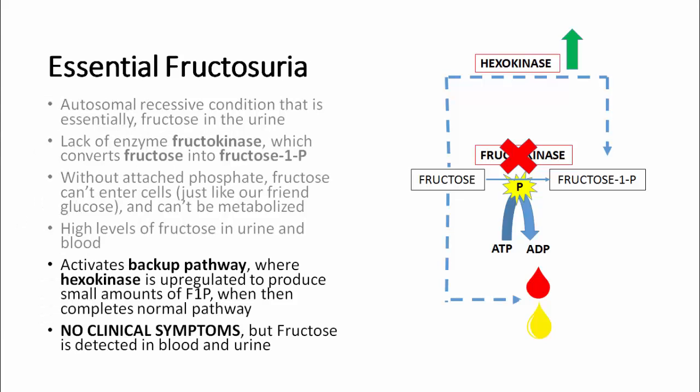It is worth noting that in patients with essential fructosuria, a backup pathway is activated in the body by which fructose is phosphorylated instead by the enzyme hexokinase, which is normally dormant in people without this disorder. Through this enzyme, patients are able to produce small amounts of fructose-1-phosphate, which then completes the normal pathway. Regardless, this disorder is typically associated with no clinical symptoms other than detectable fructose in both the blood and the urine.